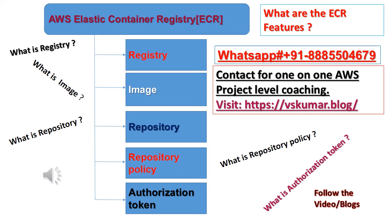What is Registry? An Amazon ECR registry is provided to each AWS account. You can create image repositories in your registry and store images in them. For more information, see Amazon ECR Private Registries. What is Image? You can push and pull container images to your repositories. You can use these images locally on your development system, or you can use them in Amazon ECS task definitions and Amazon EKS pod specifications. For more information, see using Amazon ECR images with Amazon ECS and using Amazon ECR images with Amazon EKS.